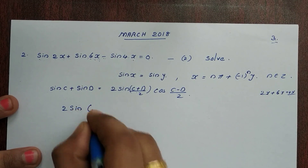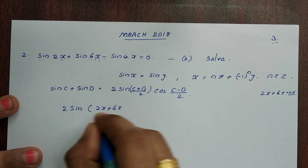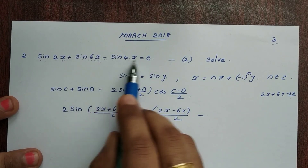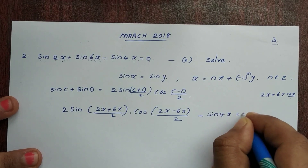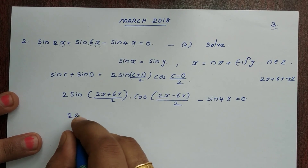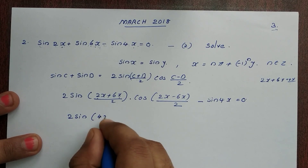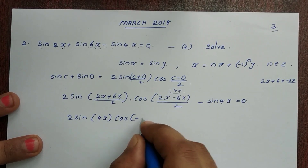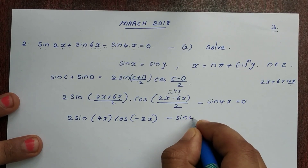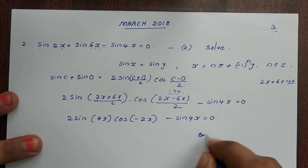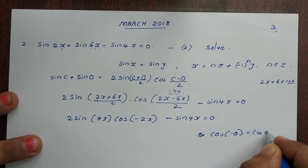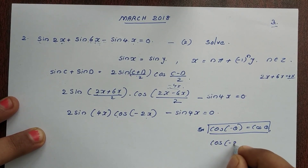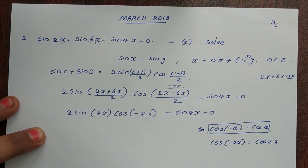Applying the formula sinC + sinD = 2sin((C+D)/2)·cos((C−D)/2), we get: 2sin((2x+6x)/2)·cos((2x−6x)/2) minus sin4x equals 0. Since 2x+6x = 8x divided by 2 gives 4x, and using cos(−θ) = cosθ, cos(−2x) equals cos2x.